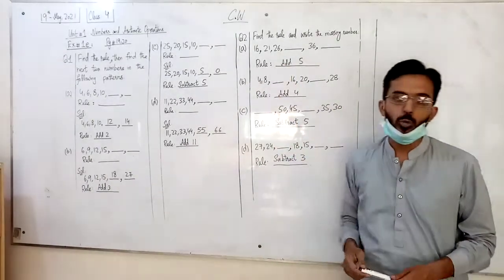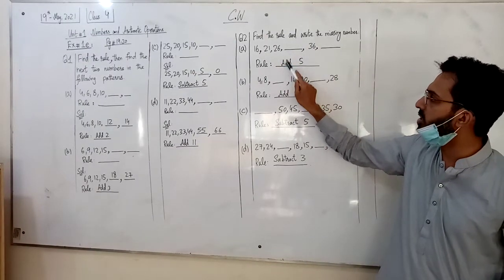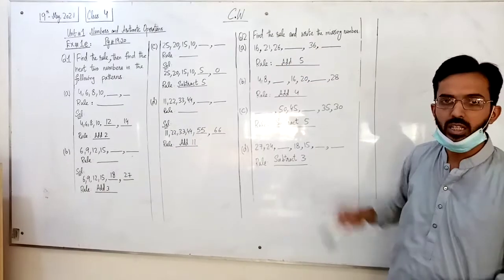Now, question number 2. Find the rule and write the missing number. So if you want to write the rule, you will find the missing number. Okay, let's see.